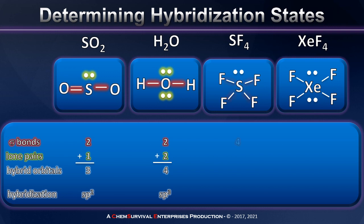Sulfur tetrafluoride has four sigma bonds and one lone pair, meaning I need a total of five hybrid orbitals — so the central atom is SP3D hybridized. Finally, xenon tetrafluoride has four sigma bonds and two lone pairs for a total of six hybrid orbitals necessary. Six hybrid orbitals out means I put six atomic orbitals in, and in order of increasing energy, that means SP3D2 is the hybridization about that central xenon atom.